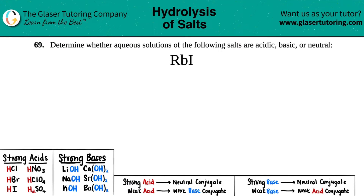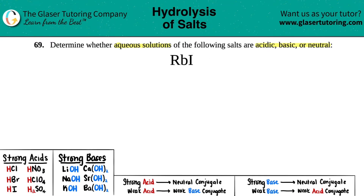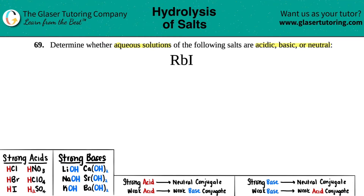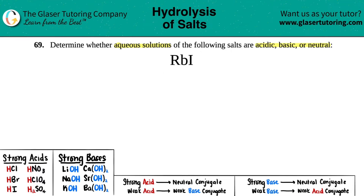Number 69: determine whether aqueous solutions of the following salts are acidic, basic, or neutral. We have rubidium iodide, which is RbI. In order to determine whether a salt is acidic, basic, or neutral, the first thing is you're going to break this ionic structure, because that's what salts are — salts are just ionic compounds.